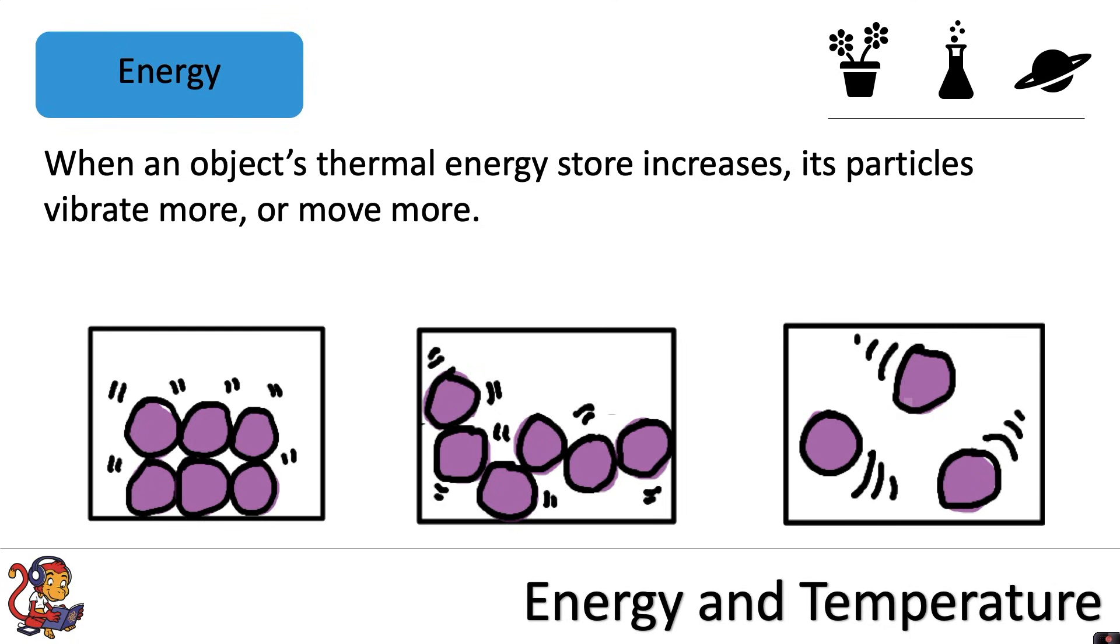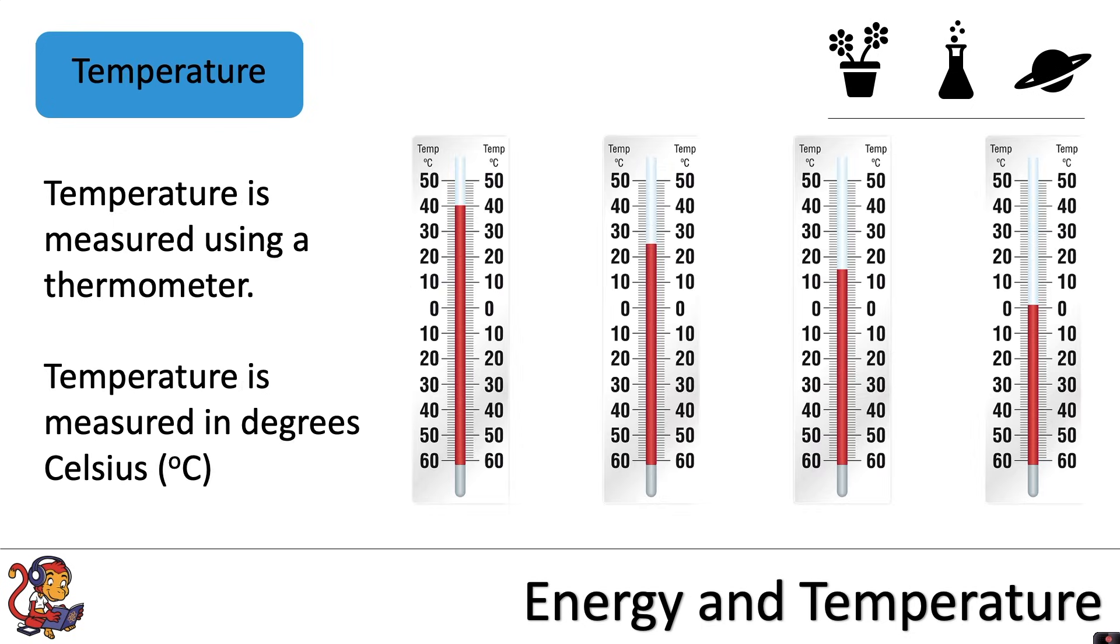Because of the thermal energy store increasing, the object's temperature increases. So temperature is a measure of how hot something is. Temperature is measured using a thermometer in degrees Celsius, as opposed to energy which is measured in joules.